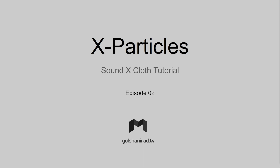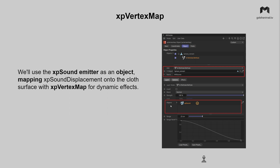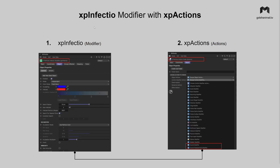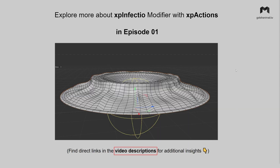Hello, this is Mahmood and welcome to the second episode of our sound and cloth tutorial series. In this episode we will use XP sound modifier with XP vertex map together, along with XP sound displacement modifier and XP dynamic tag to create our audio reactive cloth simulation. We will use an emitter as an object to map our XP sound displacement onto the cloth surface. In the previous episode we used XP infection modifier with XP actions. If you missed episode 1, you can find direct links in the video description.